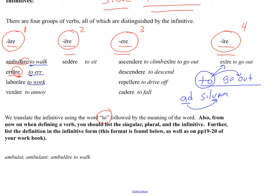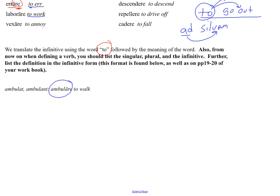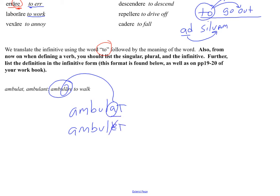Whenever we're doing our vocabulary from now on, I want you to include that infinitive, because it tells me what family it belongs to. And later on, that'll be very important when we're trying to decide whether to put 'ambulat,' which is correct because it belongs to the first family. We don't put an E-T there — that's wrong. The only reason I know that is because ambulare is A-R-E, first family, it has an A not an E for its present tense.